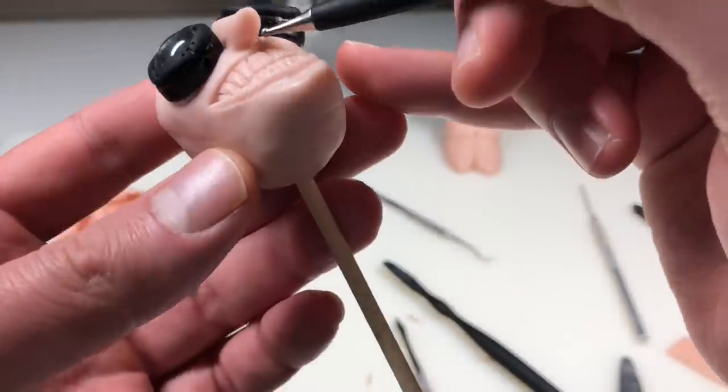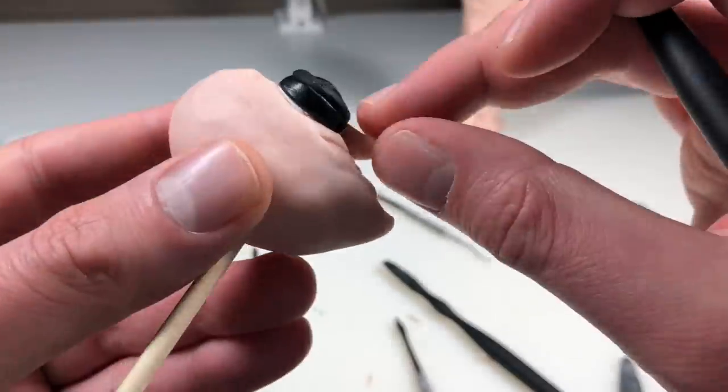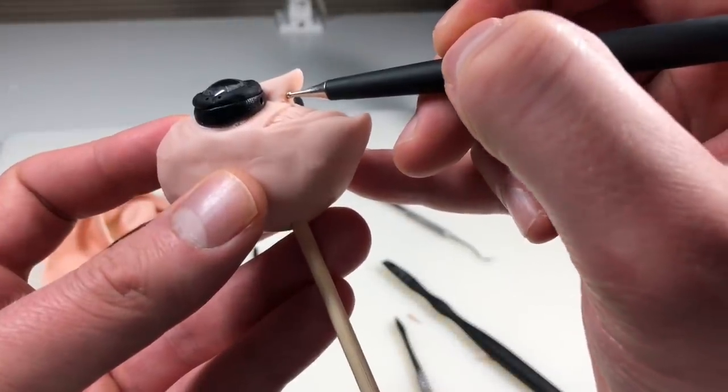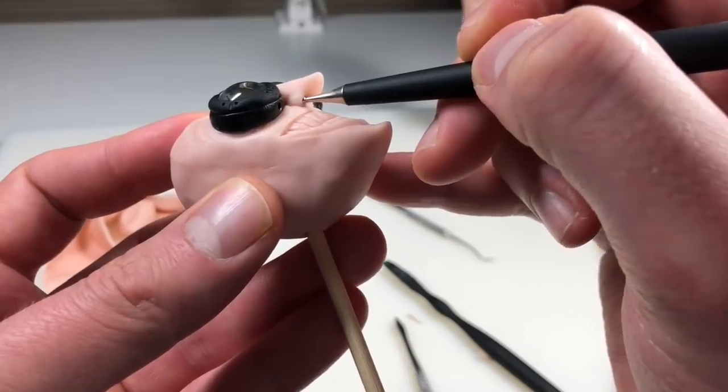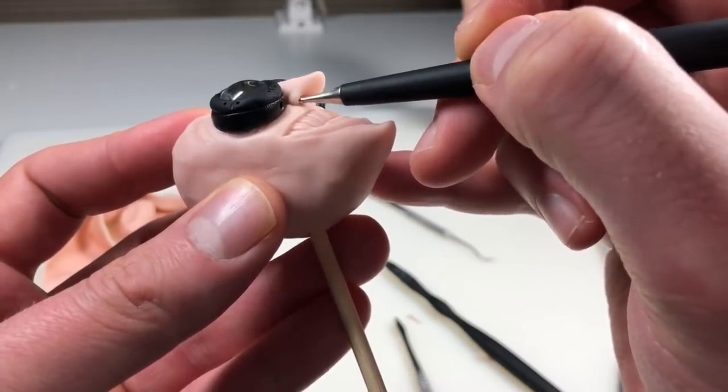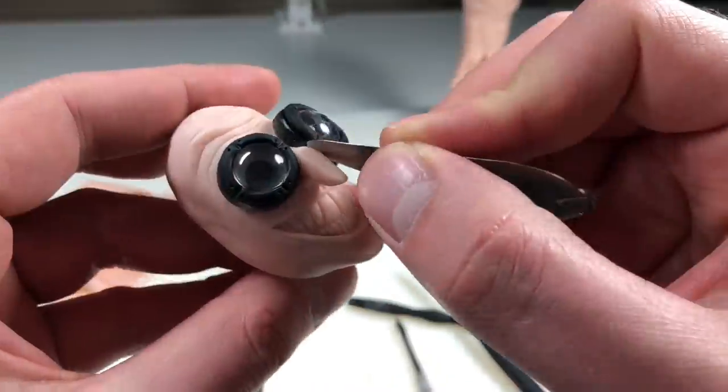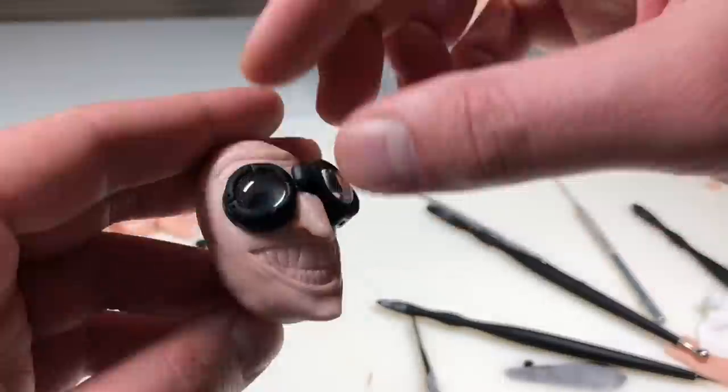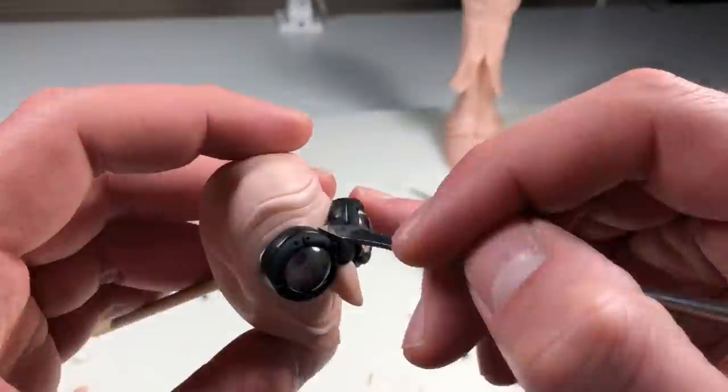Just blending in the edges there using my firm detail tools. Now we're giving him some nostrils. Here's some satisfying nostril action for ya. Shaping everything out. Adding the center piece to the goggles.